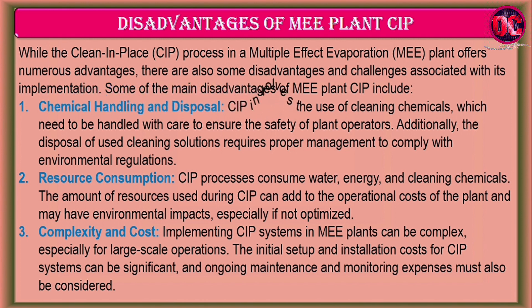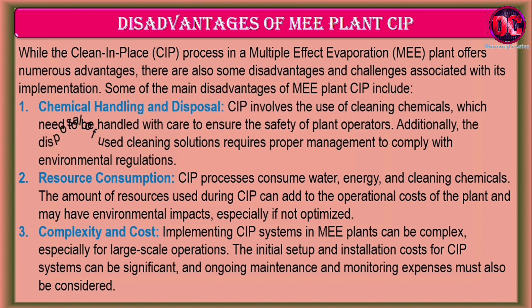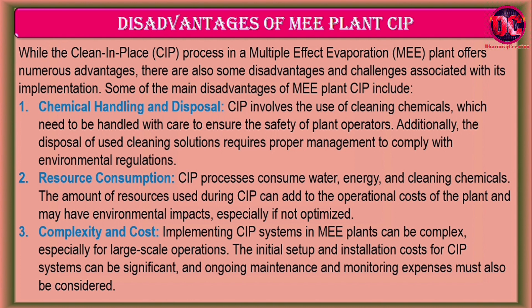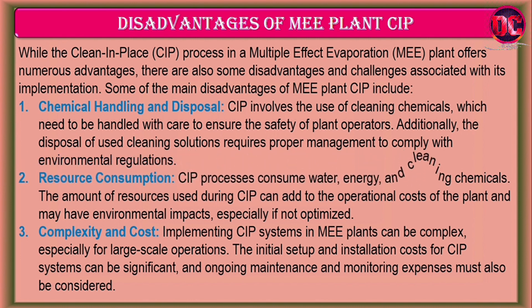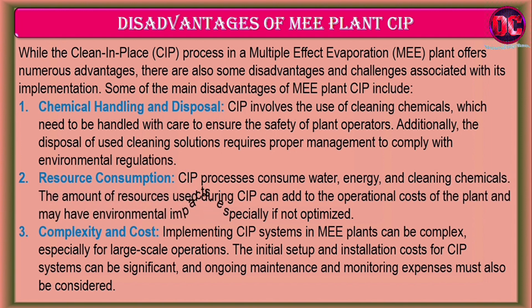1. Chemical Handling and Disposal: CIP involves the use of cleaning chemicals which need to be handled with care to ensure the safety of plant operators. Additionally, the disposal of used cleaning solutions requires proper management to comply with environmental regulations. 2. Resource Consumption: CIP processes consume water, energy, and cleaning chemicals. The amount of resources used during CIP can add to the operational costs of the plant and may have environmental impacts, especially if not optimized.